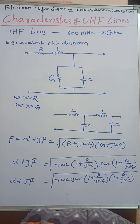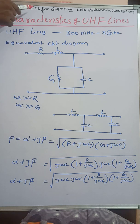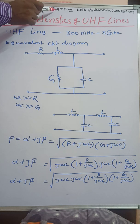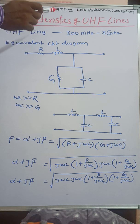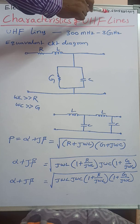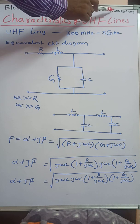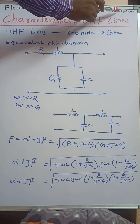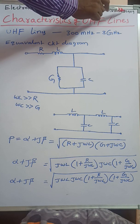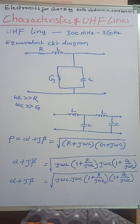Hi, welcome to my YouTube channel Electronics for Gate by Kota Venkana. Mobile number: 630-58-26-909.